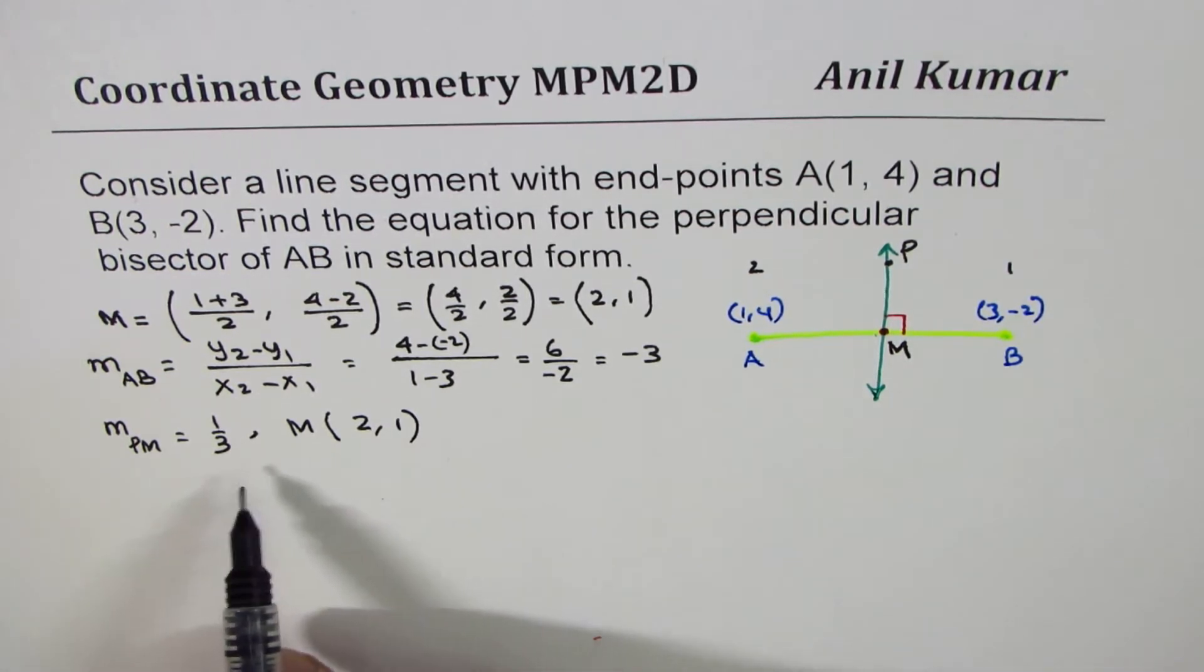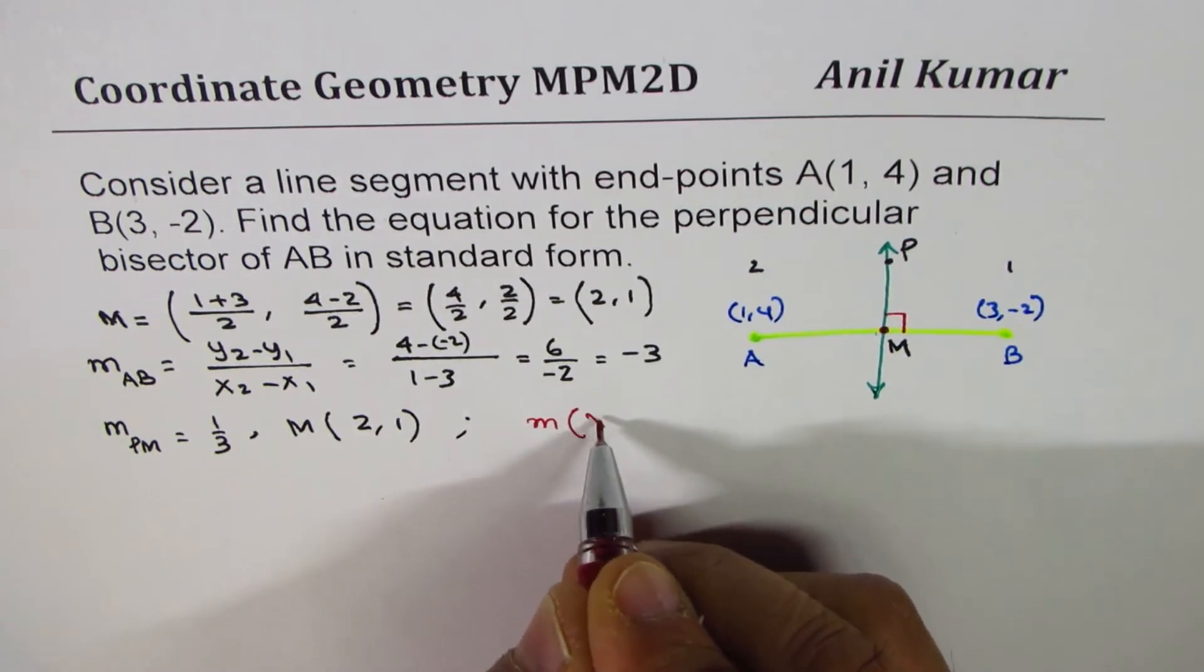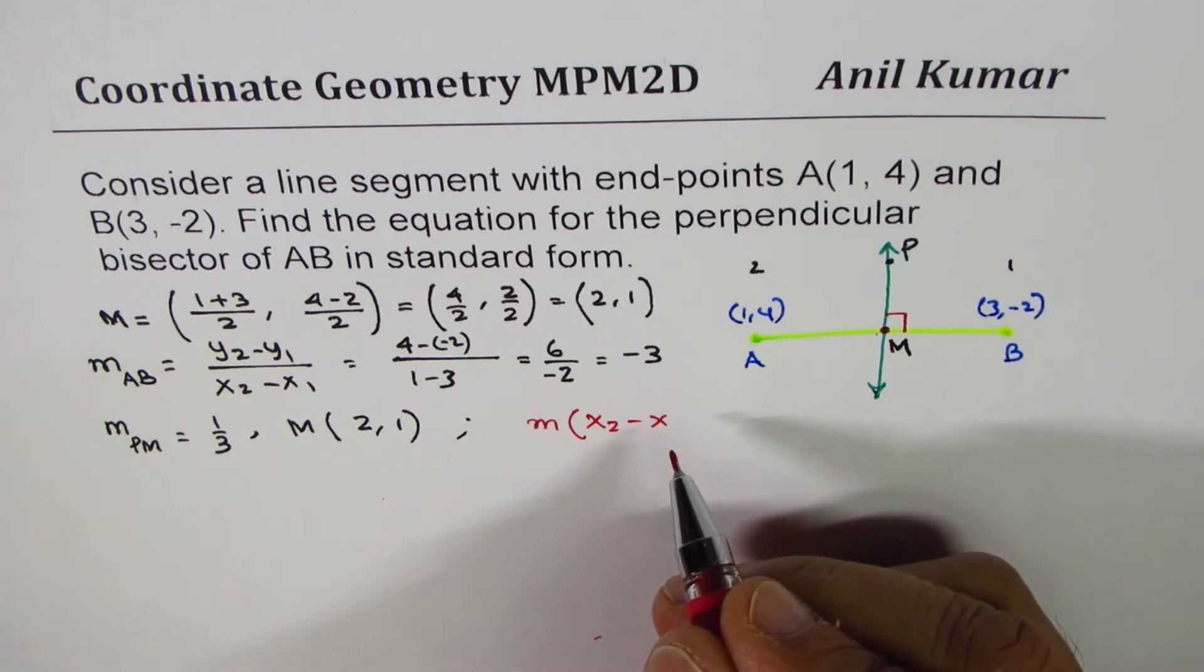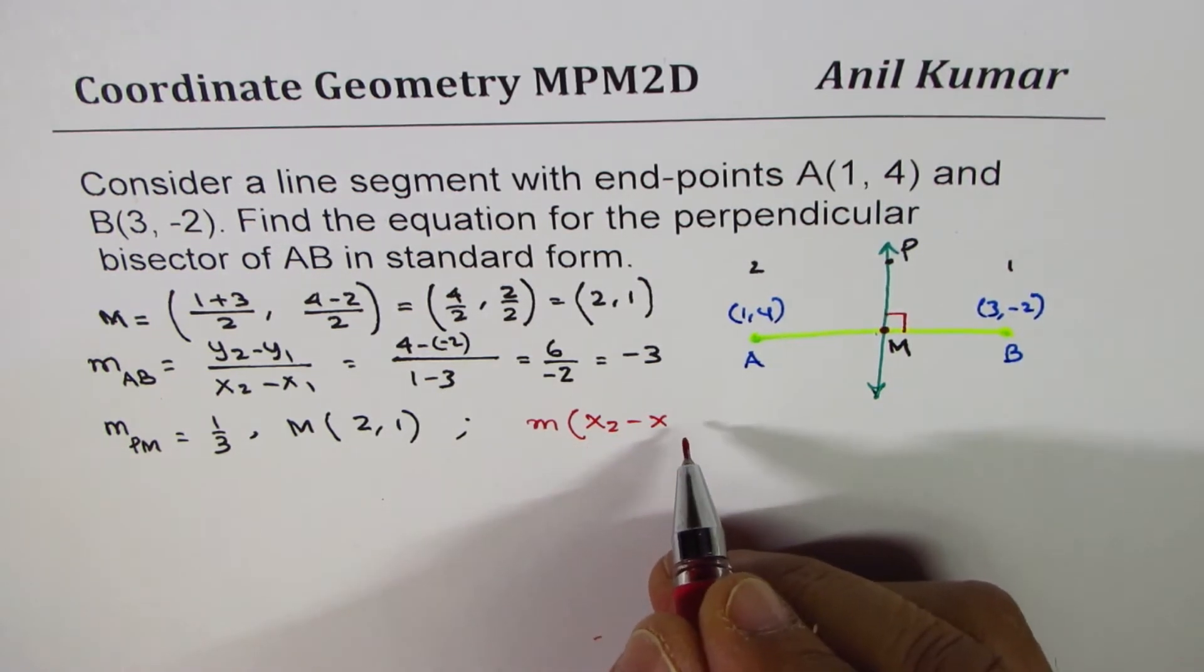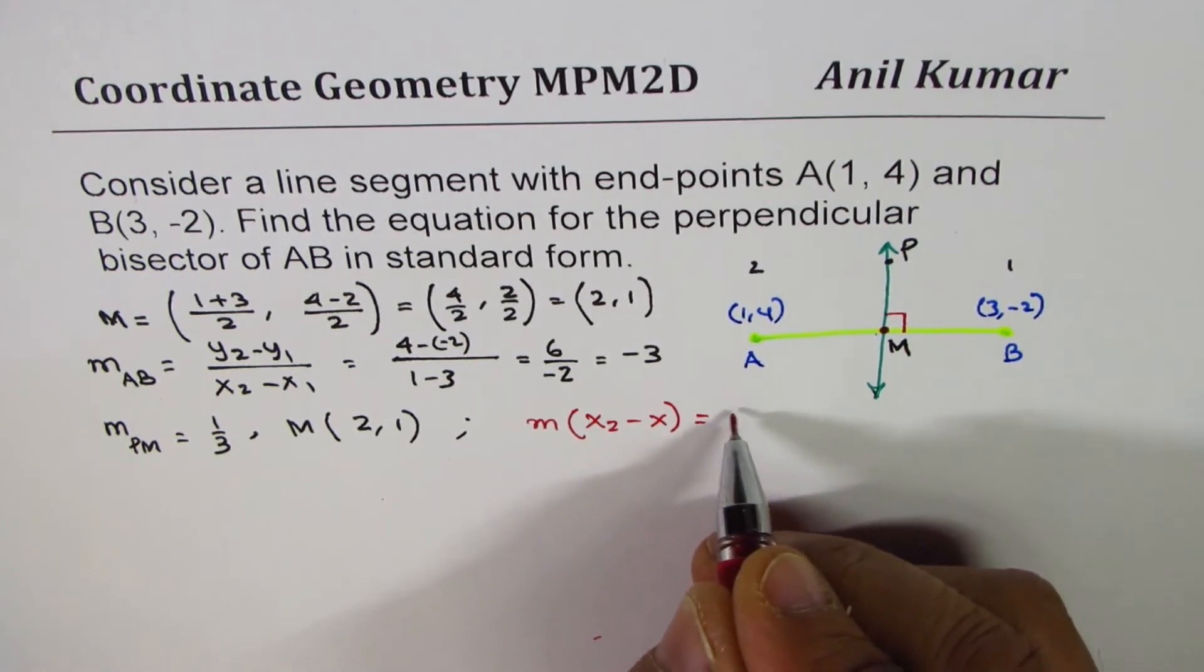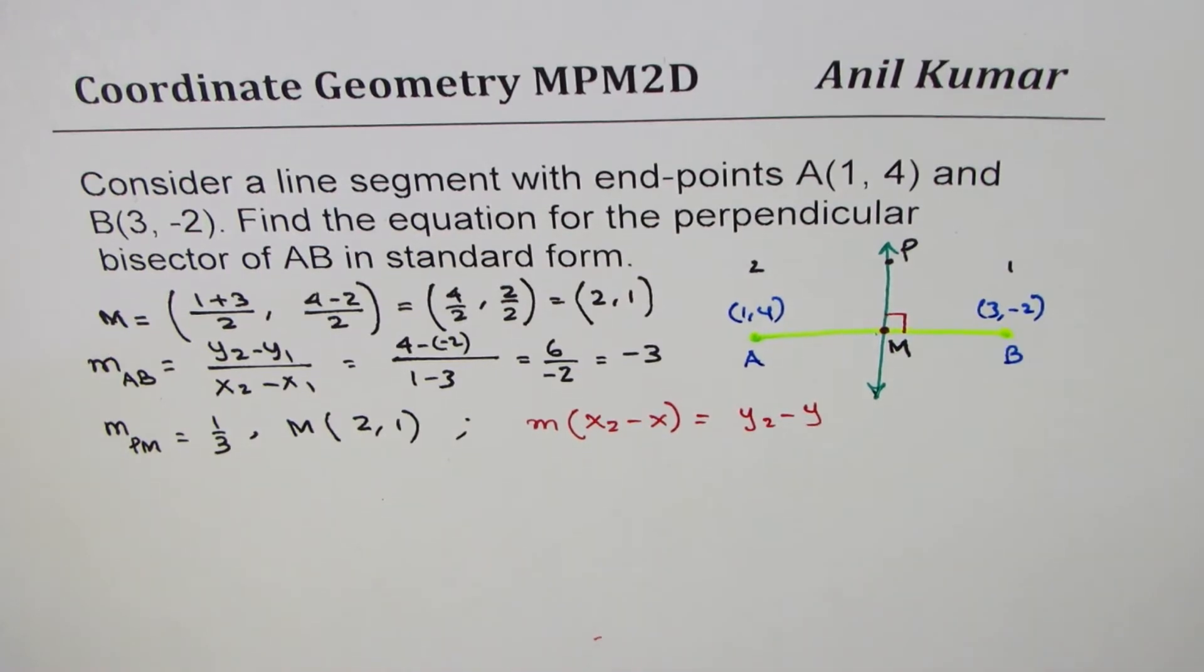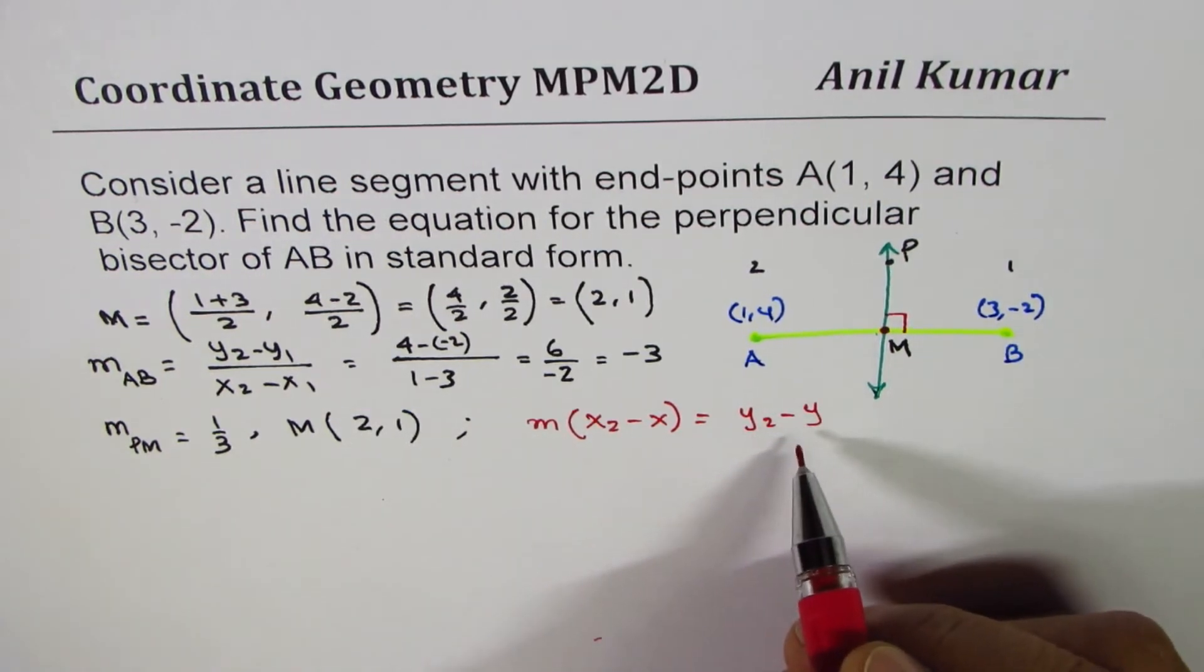Now, since we have to write in standard form, it is a good idea to use the equation of line, which is M times (x2-x), or you can say (x2-x1). We normally write (x-x2), also you can write, equals to (y2-y). So, basically, we have rearranged the slope formula and then returned it.